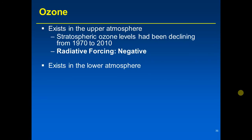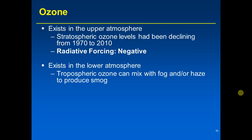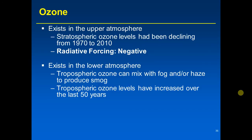In the lower atmosphere, ozone is actually a nemesis for humans. Tropospheric ozone can mix with fog or haze to produce smog, which causes watery eyes, difficulty breathing, and other health effects. So ozone is unhealthy for humans and plants in the troposphere, even though we need it in the stratosphere to protect us from UV. Additionally, tropospheric ozone can contribute to the greenhouse effect. Tropospheric ozone levels have increased over the past 50 years, enhancing the greenhouse effect and producing a positive radiative forcing.